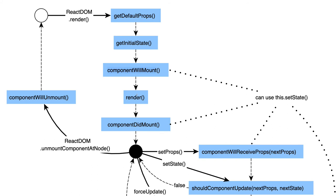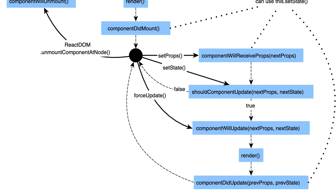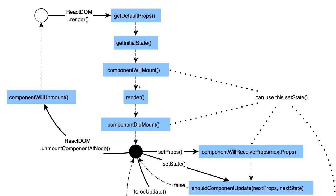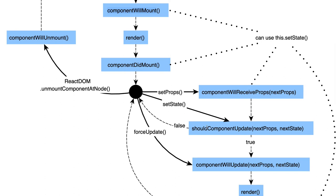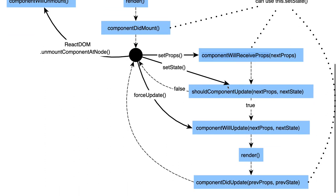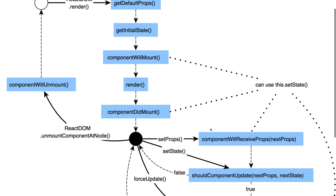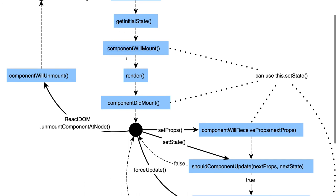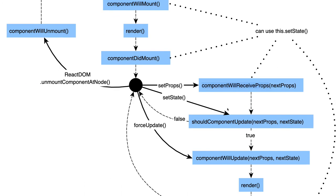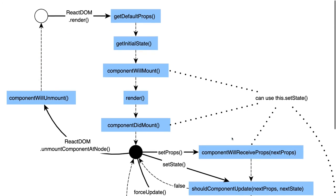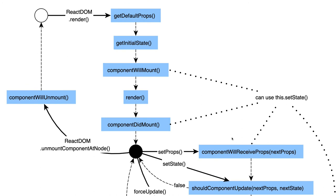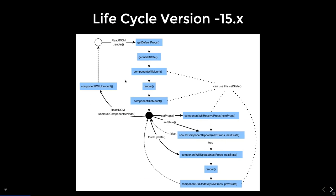componentWillMount is called before the component renders, and componentWillUpdate is also called before render. Now, these three methods — componentWillMount, componentWillReceiveProps, and componentWillUpdate — have been removed. They are replaced by a single new method called getDerivedStateFromProps. You can still use the deprecated ones with the 'unsafe' tag for now.